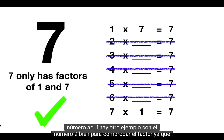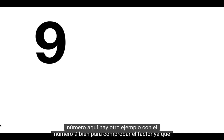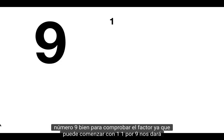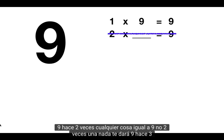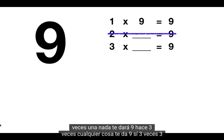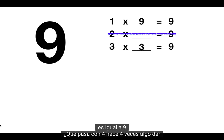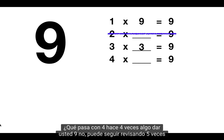Here's another example with the number 9. To check for factors we can start with 1: 1 times 9 will give us 9. Does 2 times anything equal 9? No, 2 times nothing will give you 9. Does 3 times anything give you 9? Yes, 3 times 3 equals 9. What about 4? Does 4 times anything give you 9? No.